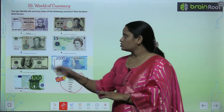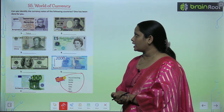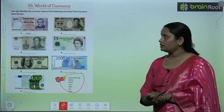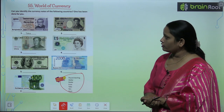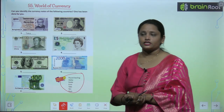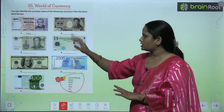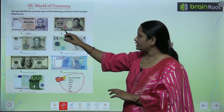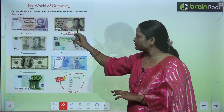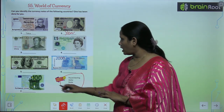Here the first one is done for you — the first is Taka, and Taka is the currency of Bangladesh. Now the currency of Japan is Yen, and the currency of China is Yuan.